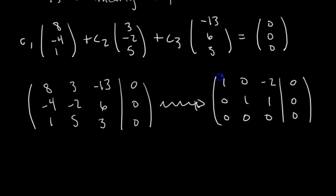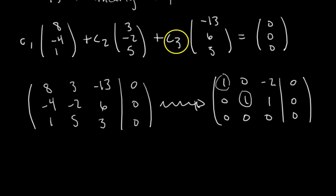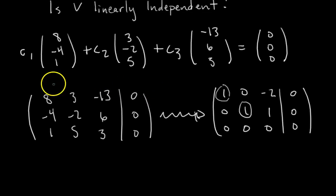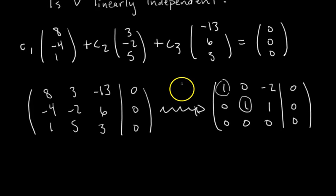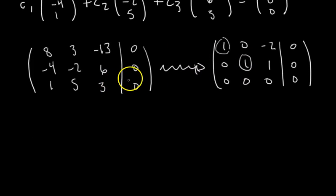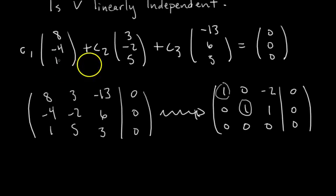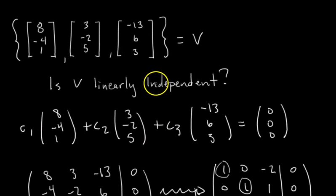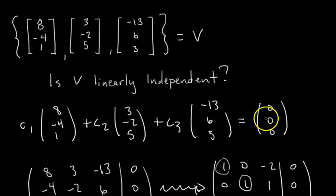We identify our pivots: there's a pivot in column one and a pivot in column two. There's no pivot in the third column, which means C3 is a free variable — giving us non-trivial solutions where C1, C2, or C3 can be something besides zero. So we already know there will be non-zero C1 through C3, and we can say the set V is not linearly independent because we'll be able to write a linear dependence relation.